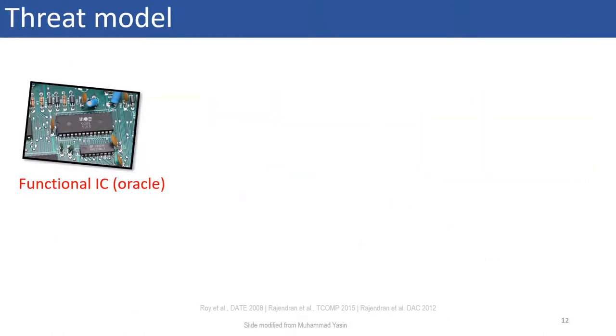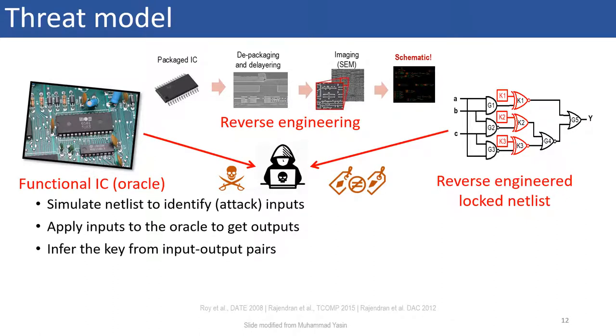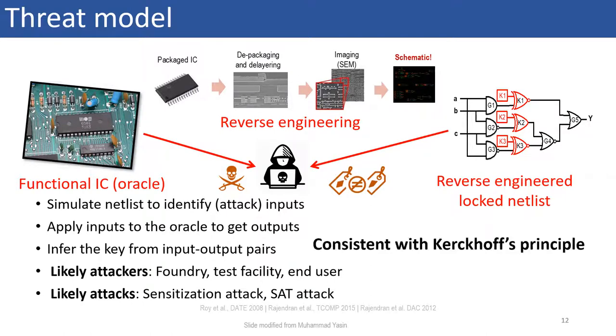In this work, we assume the most powerful attacker who has access to the working chip which can be purchased from the market with the secret key loaded inside. The working chip is an oracle and the attacker also has access to the reverse engineered netlist that includes key logic. This can be obtained by reverse engineering the physical chip or the GDS2 file. Now, the attacker can simulate and apply these input patterns to the working chip to collect the output responses. The attacker can then figure out the security and break the defense. The likely attacker in this case can be an untrusted foundry, untrusted test facility, an end user or even a combination of these. Example of such an attack is SAT attack. Further, it is consistent with Kerckhoffs' Principle, which states that everything about the system except the secret key must be known to the attacker.